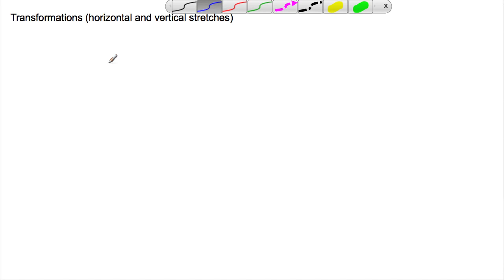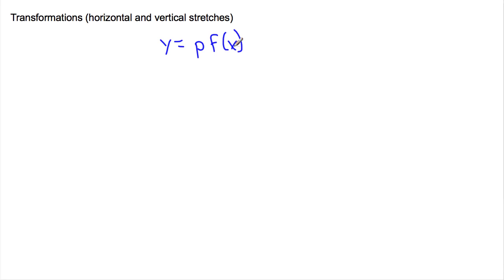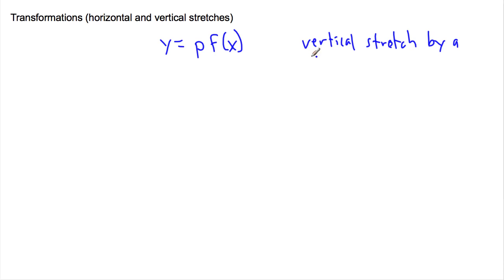To show how these work, here's an example. If we have y equals p times f(x) — some function with a number multiplied in front of it — that means it's a vertical stretch by a factor of p units. The key thing is: any time you have a number in front of the function, you do a vertical stretch by a factor of p units.